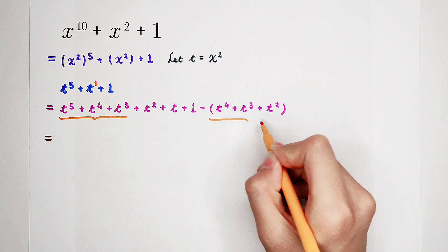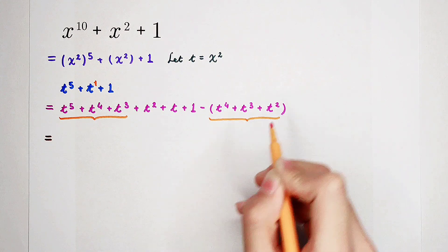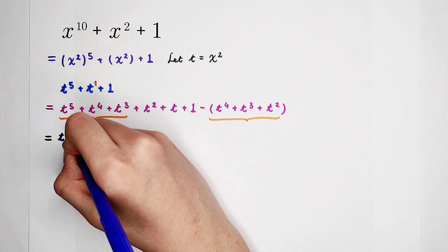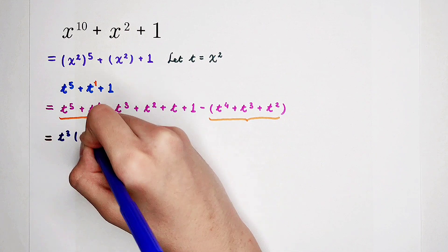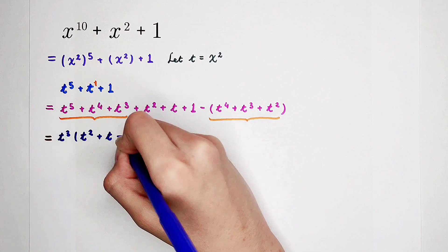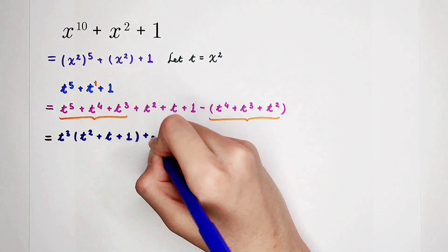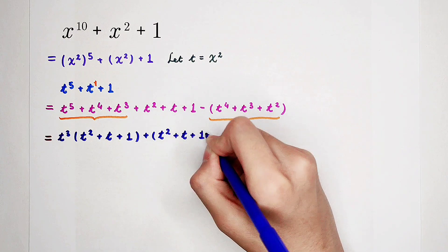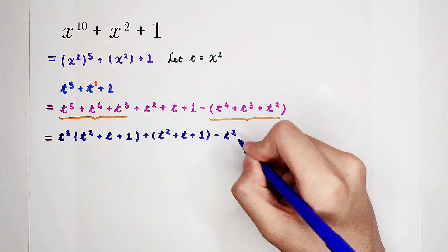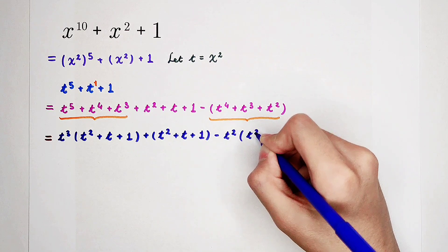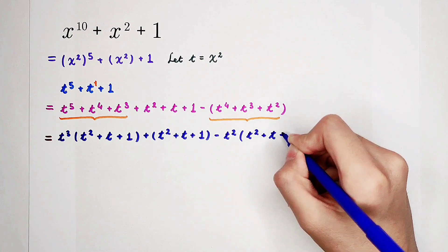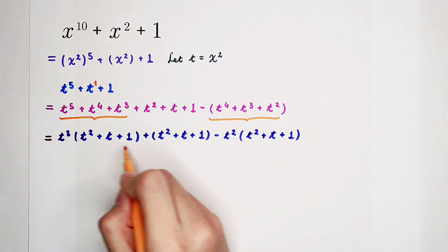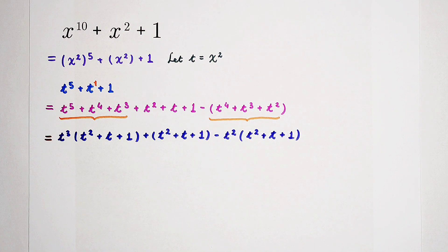And in the remaining terms, they also have a common factor — that is t squared. So if we take them out, we can get: t cubed times (t squared plus t plus 1). And you can notice that here is also t squared plus t plus 1. So then minus: take out a t squared, and in the bracket it is t squared plus t plus 1 again. Therefore, we can factor out (t squared plus t plus 1), and we get (t squared plus t plus 1) times (t cubed minus t squared plus 1).